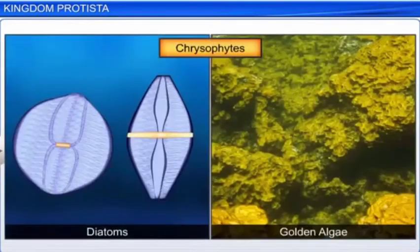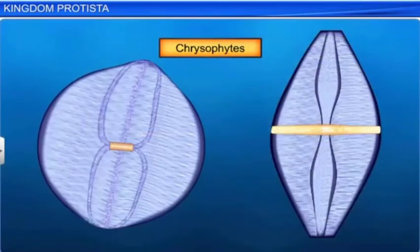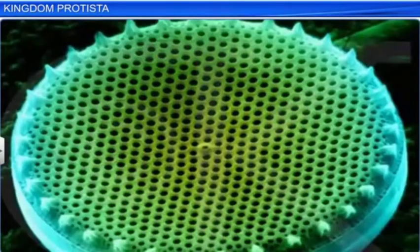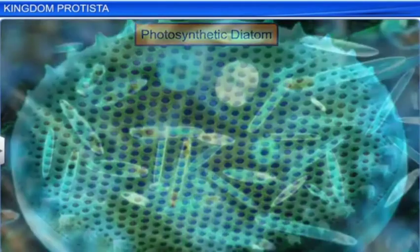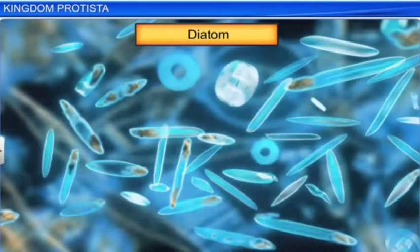Chrysophytes include diatoms and golden algae or desmids. They are microscopic and they float in great numbers in fresh water and also in saline water. They are mostly photosynthetic. Diatoms are known as chief producers in the oceans.